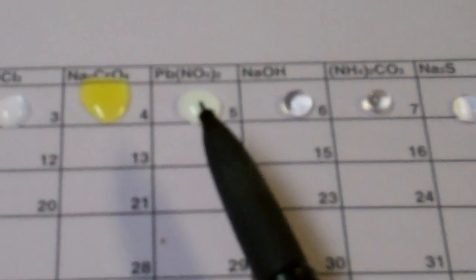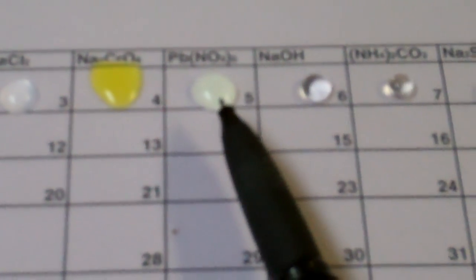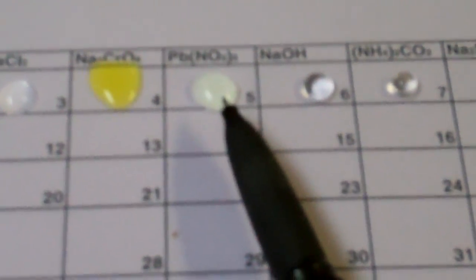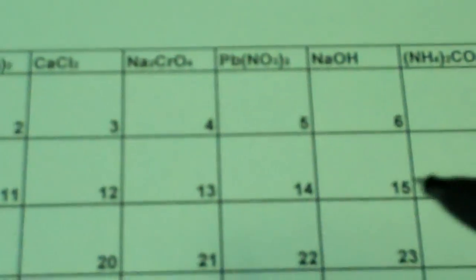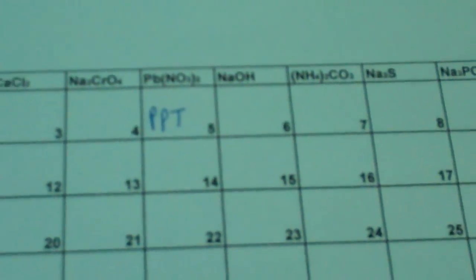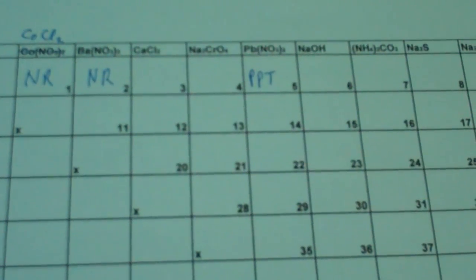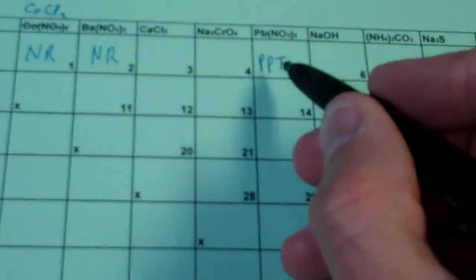Now, in box five, you can see, this is why we do this on purple paper instead of white paper, there is a white precipitate that is formed. They're not always white, but in this case, it certainly is. So, in my data table, on box number five, I am going to write the letters PPT, which will stand for precipitate. So we will know that when we finish the lab report that a precipitate formed in box number five.